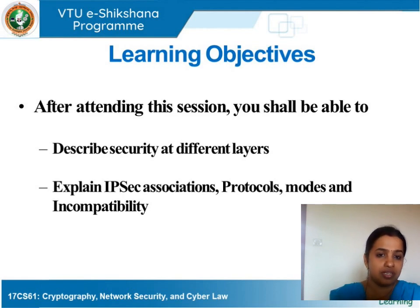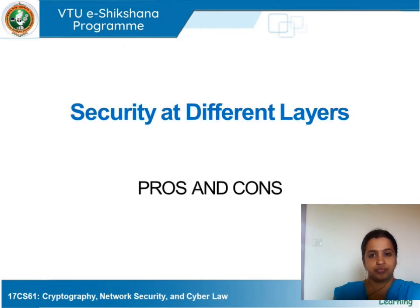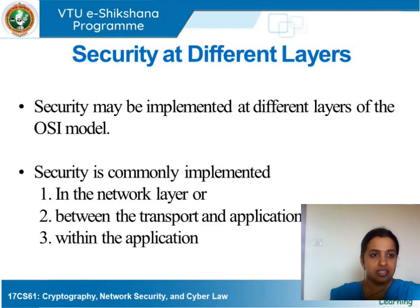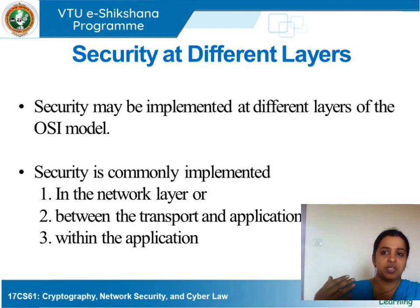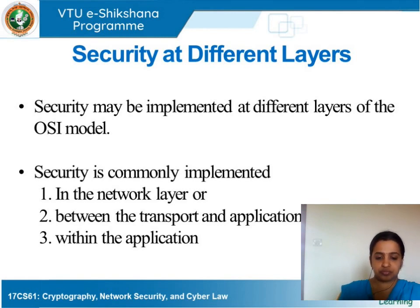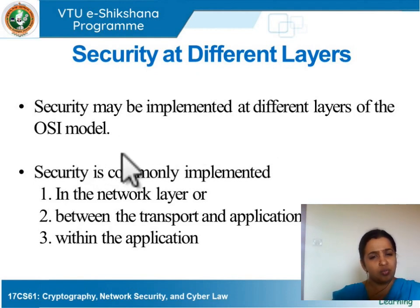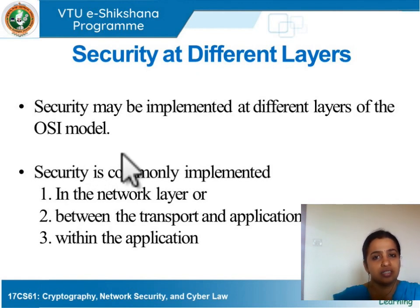Now let's understand what we mean by security at different layers. The OSI model has around seven layers. The most important layers we deal with in networking are the network layer, the transport layer, and the application layer. The question is: what if security is implemented at different layers of the OSI model?